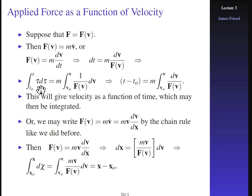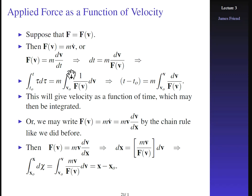We integrate the left-hand side with respect to time using a dummy variable, from initial time T₀ to time T — that's just T minus T₀. The right-hand side is mass M times the integral from V₀ to V of 1 over F(V) dV. This gives the velocity as a function of time, which may then be integrated to get the time of flight based on velocity.